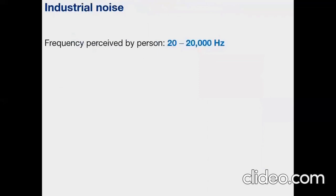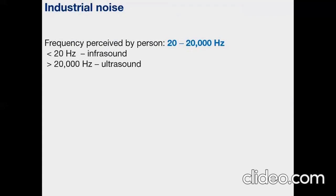A person perceives sound frequencies from 20 to 20,000 hertz. The upper limit of frequency at which airborne sounds can be heard depends primarily on the condition of a person's hearing and on the intensity of the sound. For young adults, this upper limit is usually somewhere between 16,000 and 20,000 hertz. It's important to realize that most people lose sensitivity to high-frequency sounds as they grow older. Sound of frequency below 20 hertz is called infrasound; above 20,000 hertz is ultrasound.